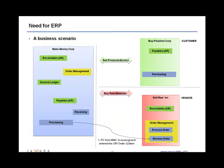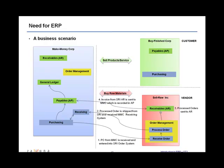Once the PO document is received and becomes a sales order, the vendor enters it into their order management system, processes the order, and ships the raw material to Make Money Corp. This is received by the receiving department of Make Money Corp. On the vendor's end, once the order is fulfilled, the order management system updates their receivables system, and the AR system creates an invoice for that customer and sends it over.